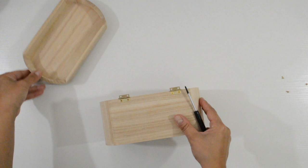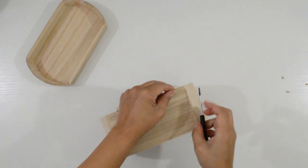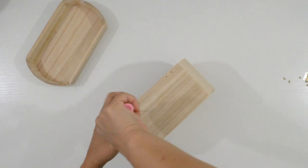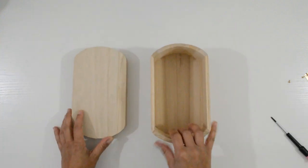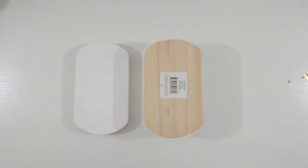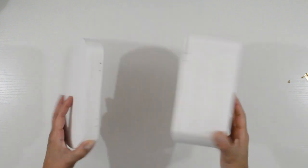Before decoupaging, make sure to remove all the hardware. I then gave it a coat of matte white acrylic paint. Doing this will make the napkin design more vibrant.